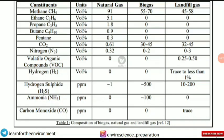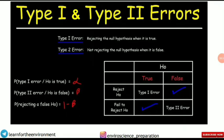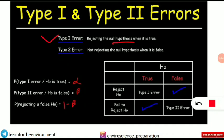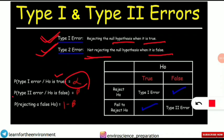The next concept is from the biostatistics portion: Type 1 and Type 2 errors. Type 1 error occurs when we reject the null hypothesis when it is actually true. Type 2 error occurs when we fail to reject (i.e., accept) the null hypothesis when it is actually false. The probability of Type 1 error is denoted by alpha (α).